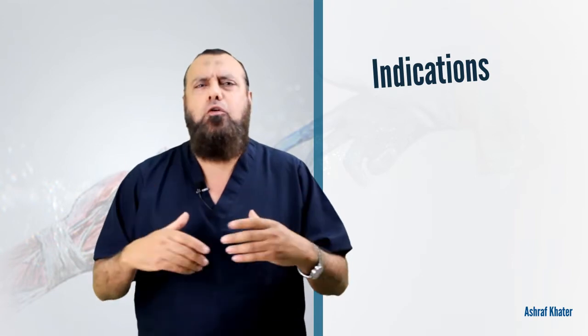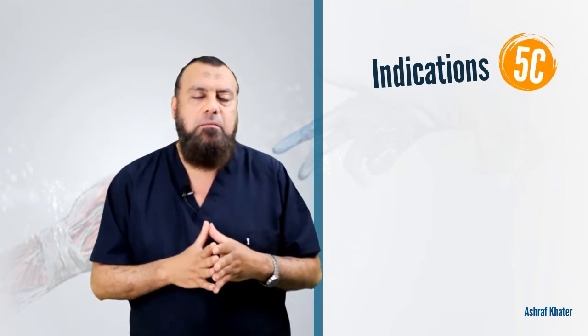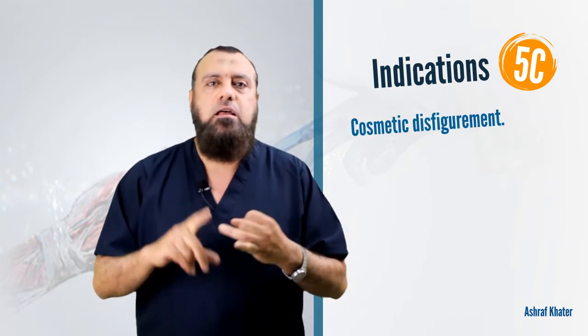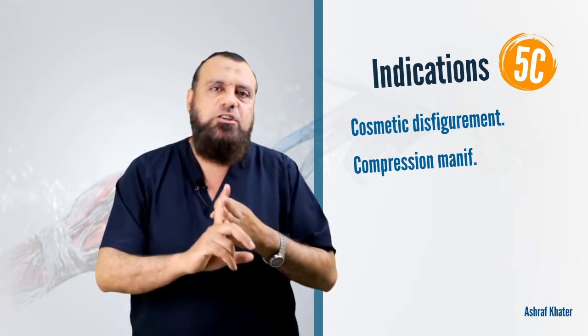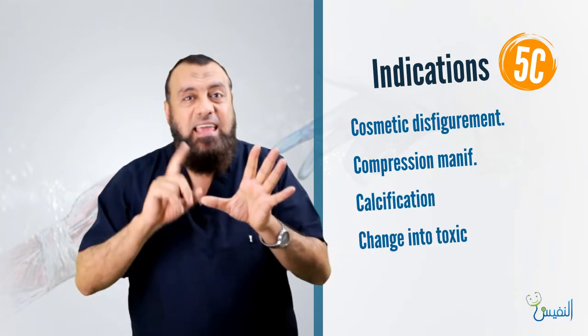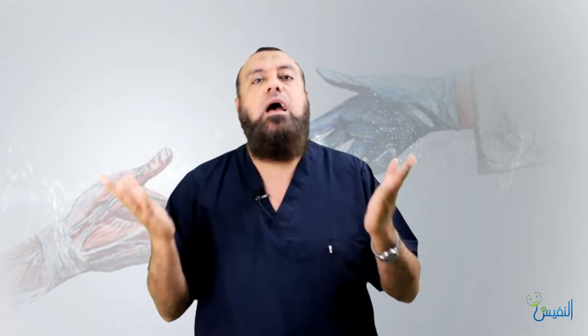The indications for surgery in multinodular goiter can be summarized as five C's: cosmetic disfigurement, compression manifestations, cystic degeneration, calcification, and cancer suspicion. Changing into toxic goiter is also an indication — secondary toxic goiter is a surgical disease because fibrosis, hemorrhage, and cystic formation make it poorly responsive to medical treatment, so surgery is the main line after medication reduces toxicity.